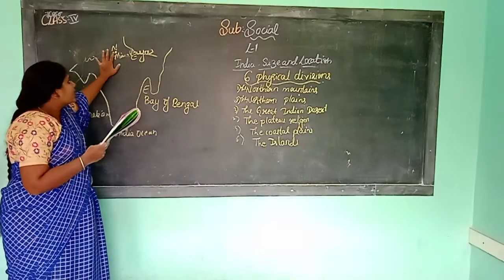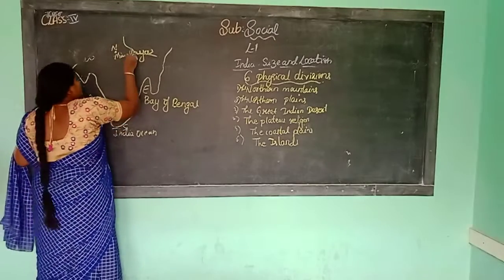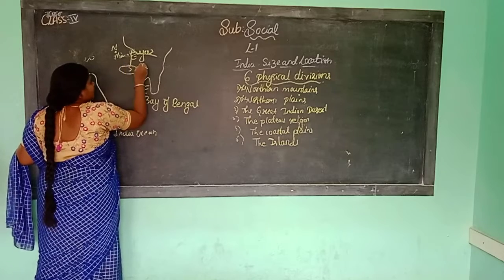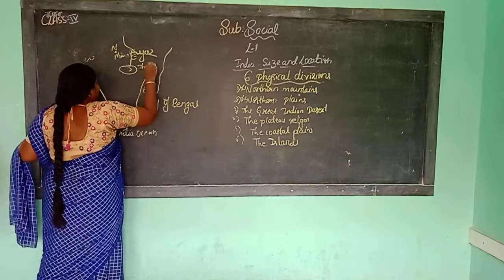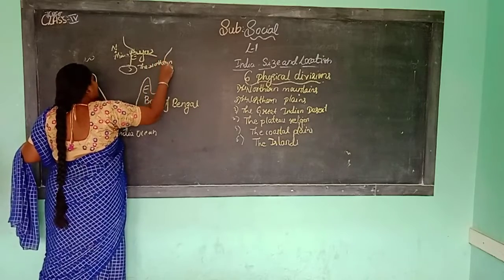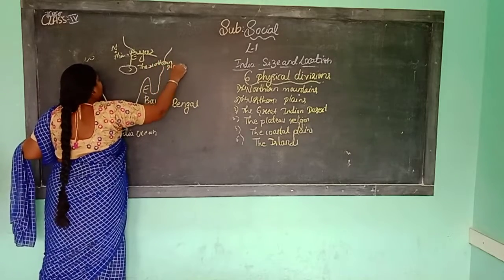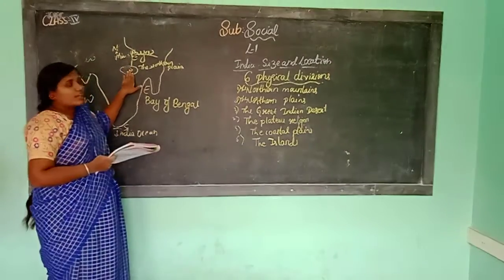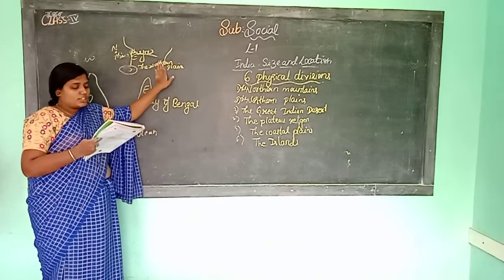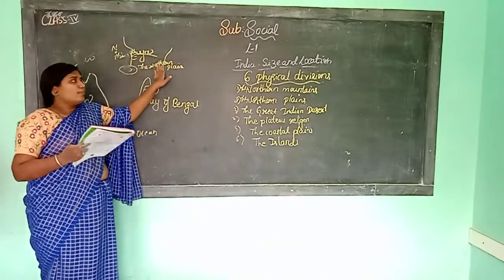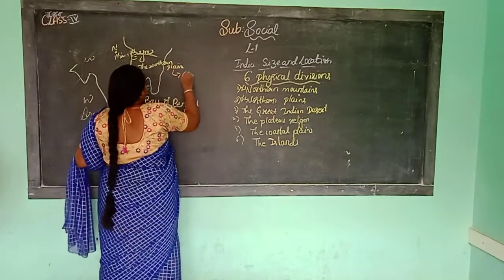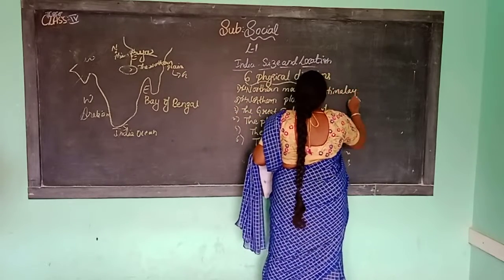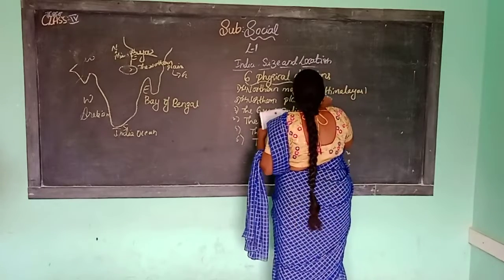The Himalayas protect us from the cold winds coming from Central Asia. Right to the south of the Himalayas are the Northern Plains. The Northern Plains are also called the Gangetic Plains.